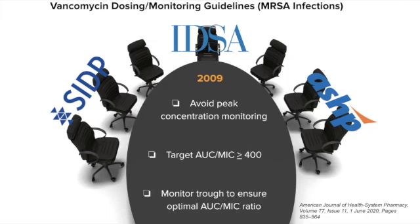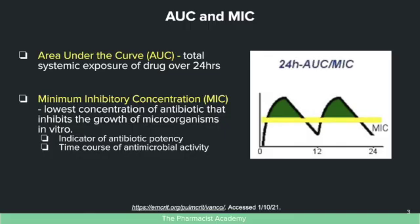Some key terms: AUC, also known as area under the curve, refers to the total systemic exposure of a drug, usually over 24 hours. The MIC, or minimum inhibitory concentration, is the lowest concentration of antibiotic that inhibits the growth of microorganisms in vitro. The MIC is a good indicator of antibiotic potency, but unfortunately it doesn't really tell you anything about antimicrobial activity over a period of time.